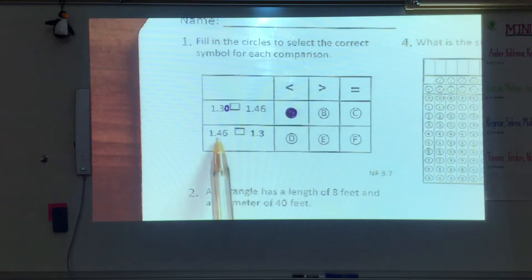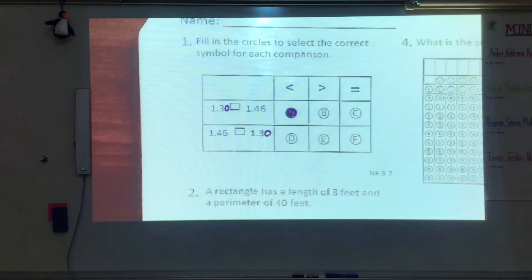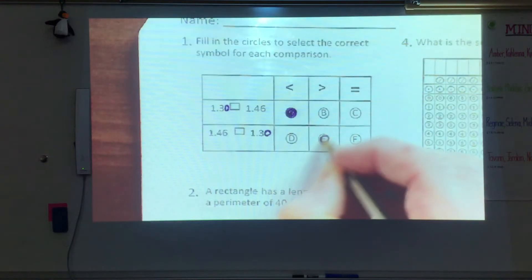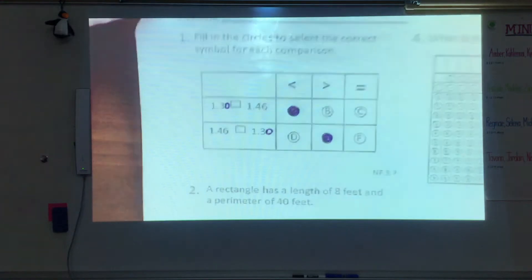And then in the next box all they did was flip the numbers around. So if we add our zero here we know that 1.46 is greater than 1.30. And there's your decimals.